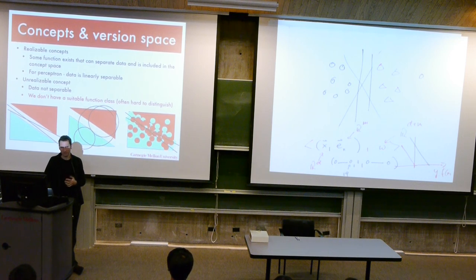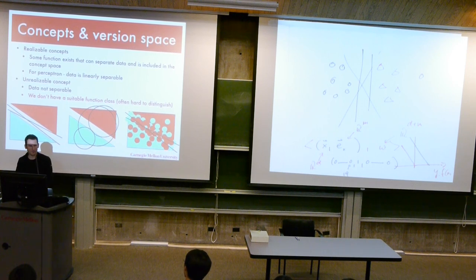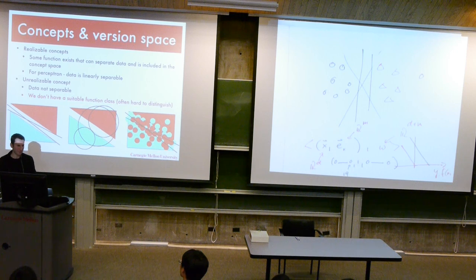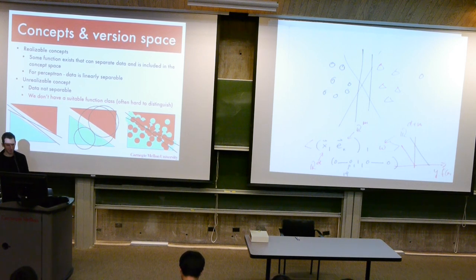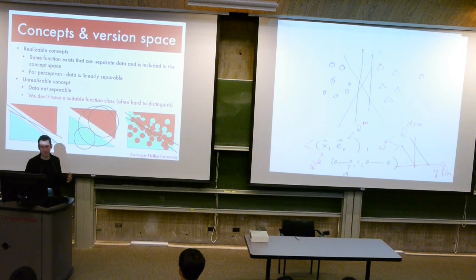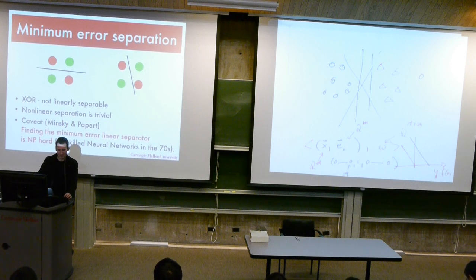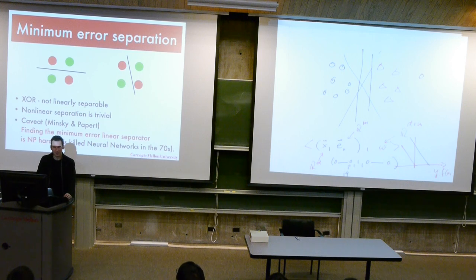We actually already saw one or two of those algorithms before — kernel density estimators and nearest neighbors. They're closely related as you increase the scale. This is basically why you want to design algorithms which, as you get more data, get better. Now let's get to the issue of minimum error separation. This sort of killed neural networks in the 70s — this is a book by Minsky and Papert — showing that if you have a problem that's not linearly separable and you want to find the linear separator with the smallest number of errors, that's actually NP-hard.